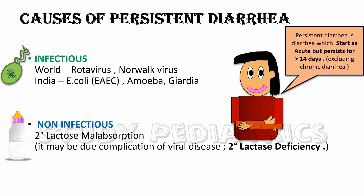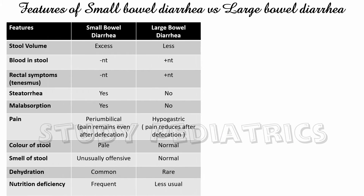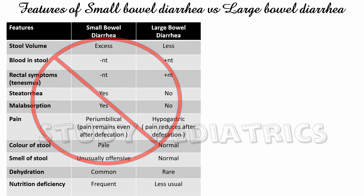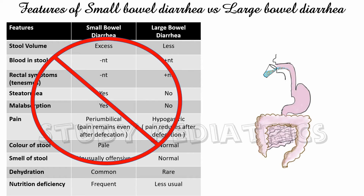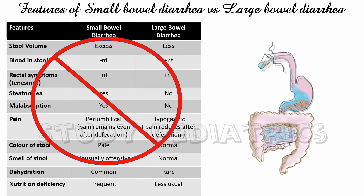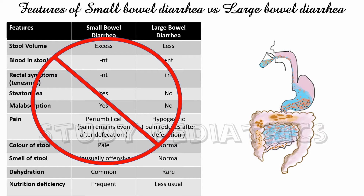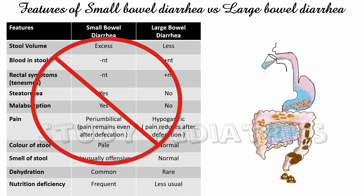Now let's look at features of small bowel diarrhea versus large bowel diarrhea. To understand this, let's first see how food moves in a normal gut. As shown in the animation, food enters the foregut and goes to the small intestine, where maximum water along with nutrient absorption takes place. It then enters the large intestine, where very little water and nutrients are absorbed, and leaves the gut as feces.